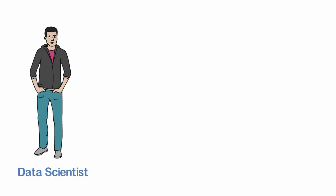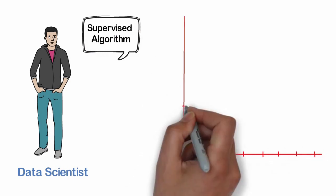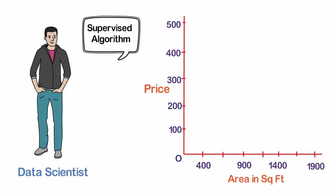Ram understands that the price for some flats is known and hence a supervised algorithm can be applied in this case. And then using this data, he plots a graph.